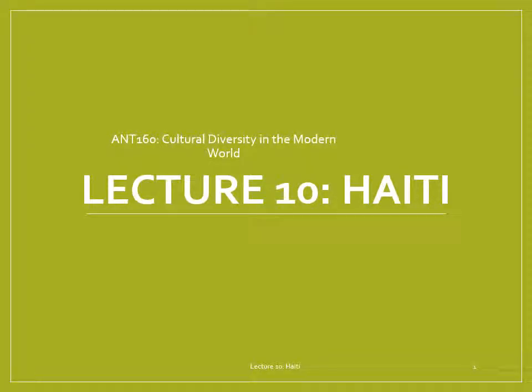For our final unit of the course, we'll examine a variety of states around the world, looking at how these largest and most complex societies operate. Because we all live in a state-organized society ourselves, we might expect the structure and functioning of such cultures to be familiar. However, what we'll see in this unit is that there are as many ways to organize a state as there are chiefdoms, tribes, and bands.